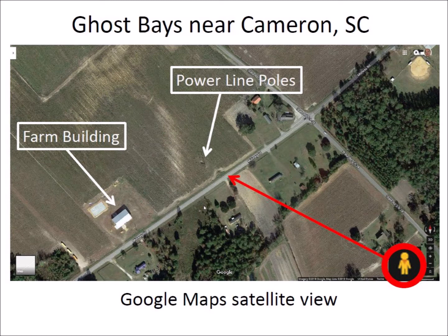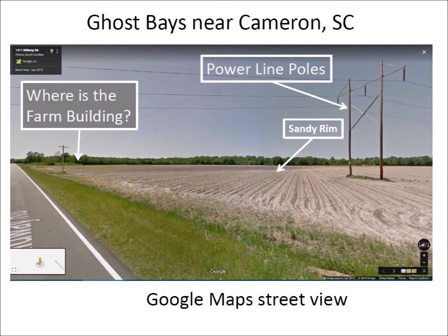Here are the same ghost bays viewed with Google Maps instead of Google Earth. Google Maps has a map view, a satellite view, and a feature called street view. The little man icon of Google Maps can be dragged toward any road photographed by Google to get a street view image. We are going to drag the icon to the road close to the power line poles, about 160 meters away from the farm building. The street view shows the power line poles, and beyond them we can see a thin fringe of white sand, which is the rim of the ghost bay. The darker soil beyond the white sand is the bay itself. Notice that the terrain seems absolutely flat — it is only through LiDAR with substantial vertical exaggeration that we can see the bays.